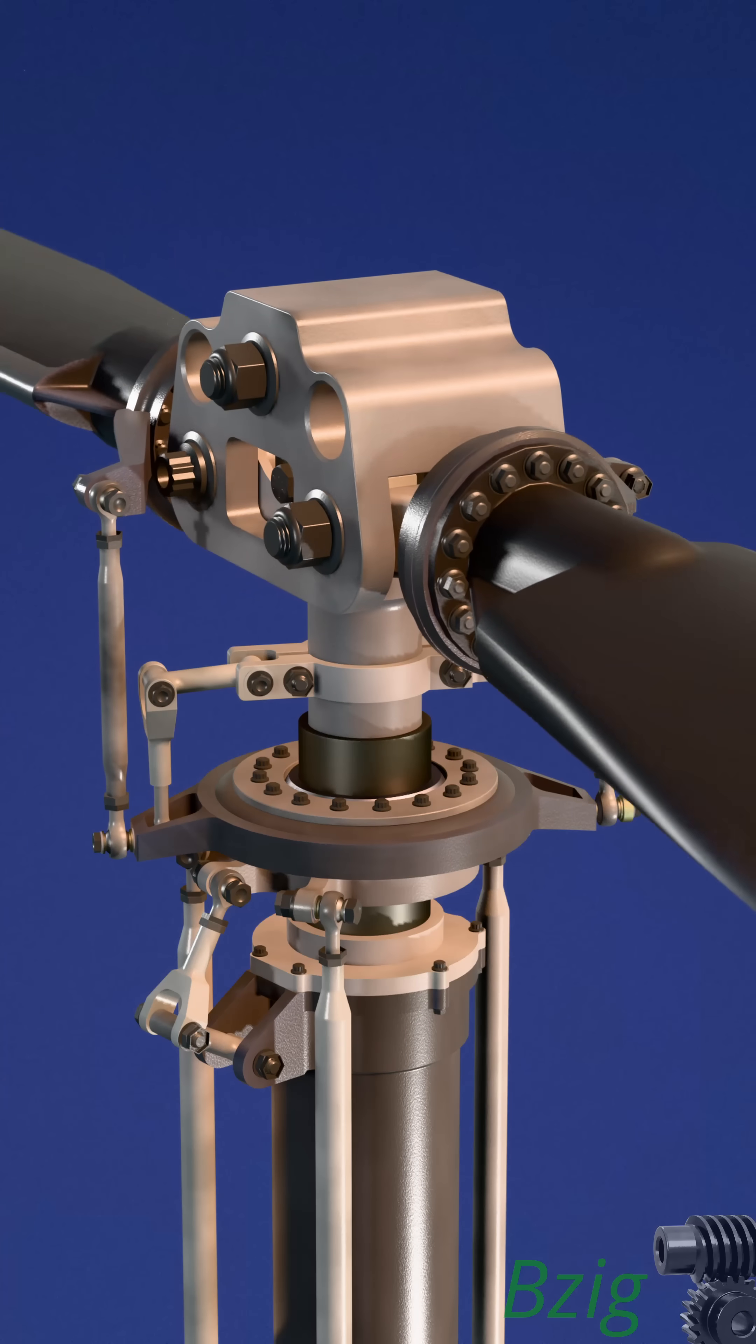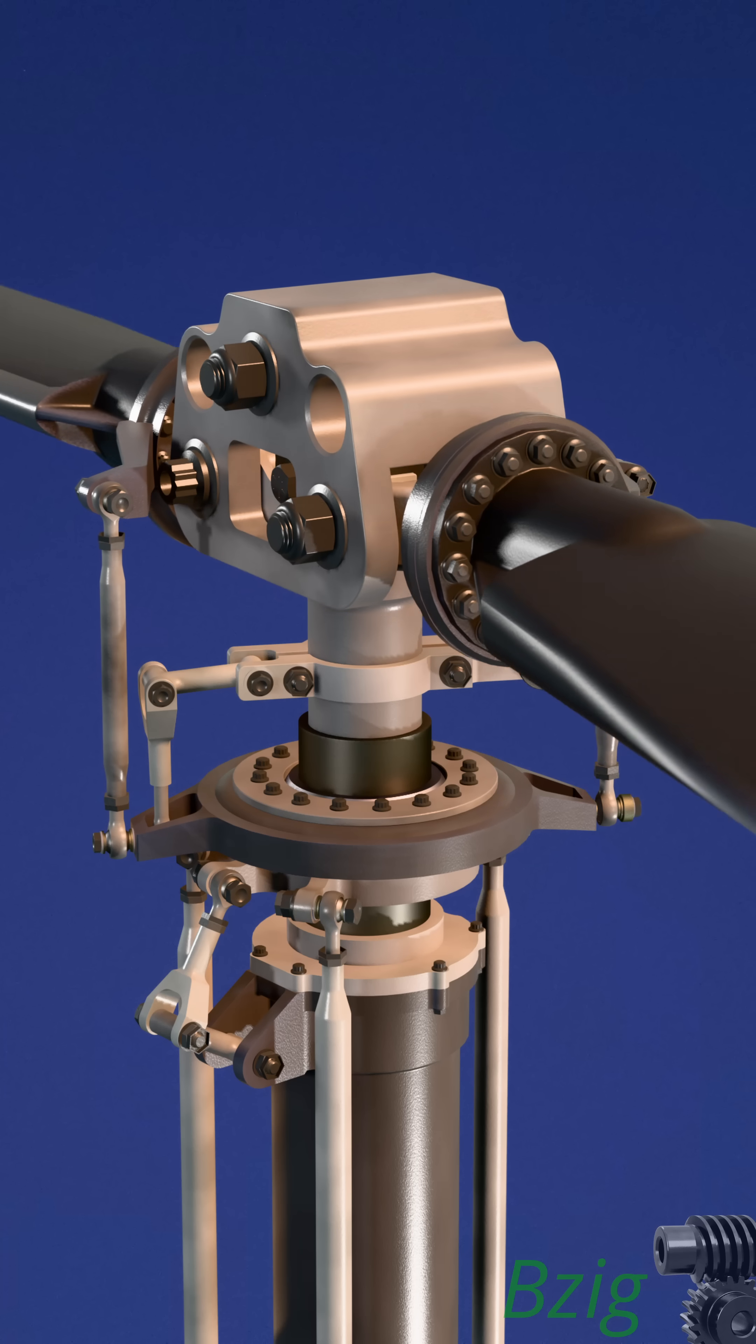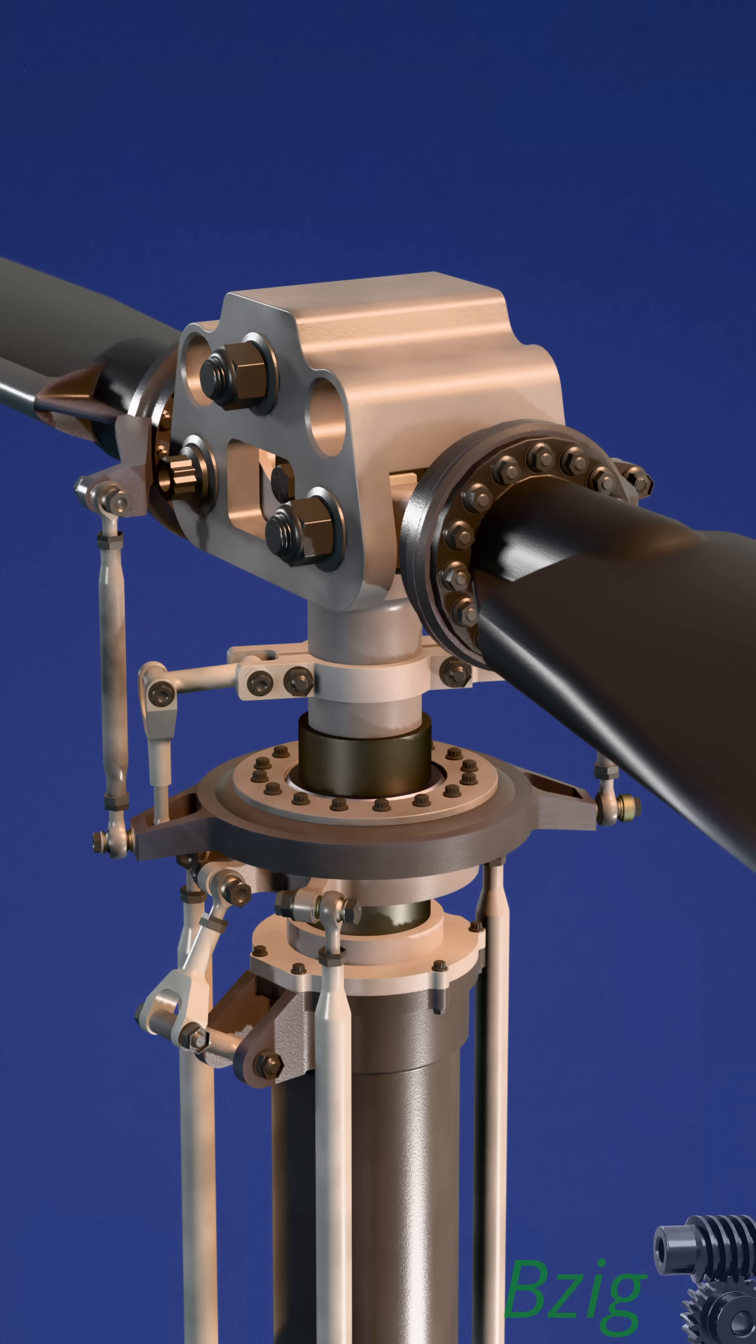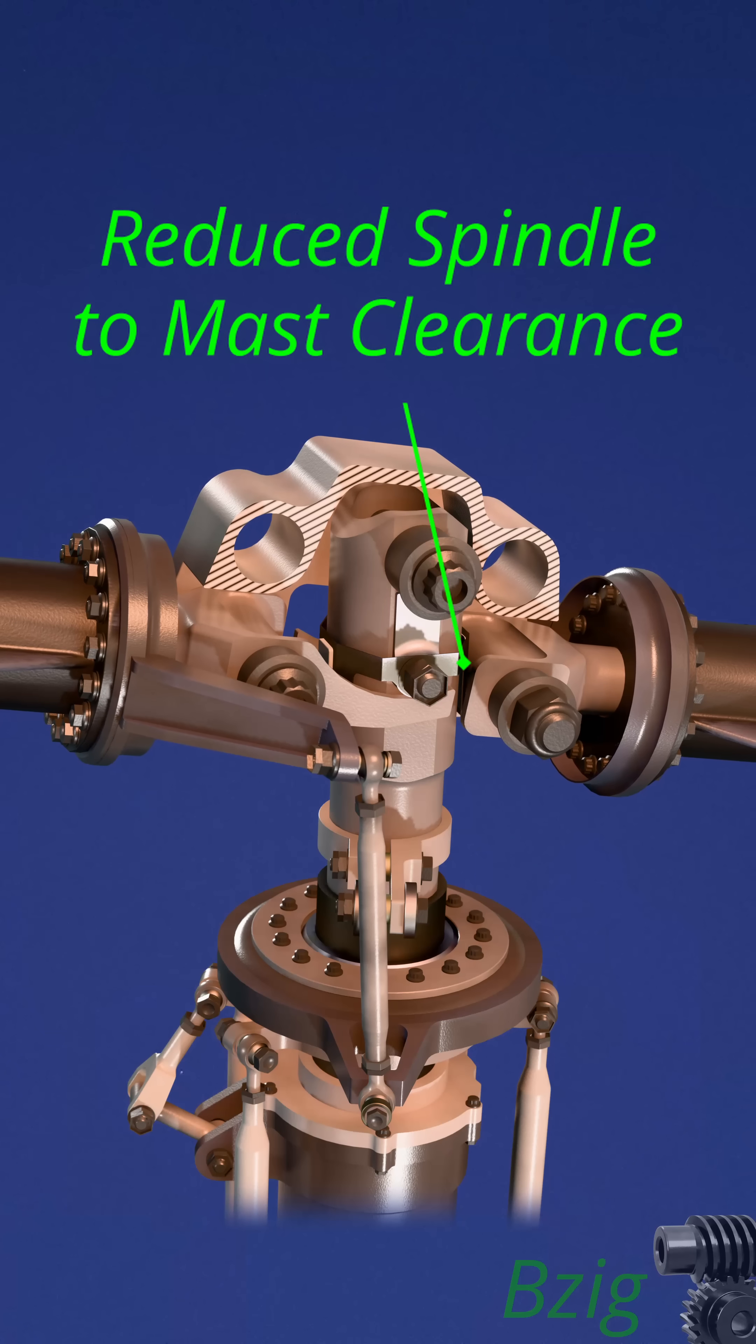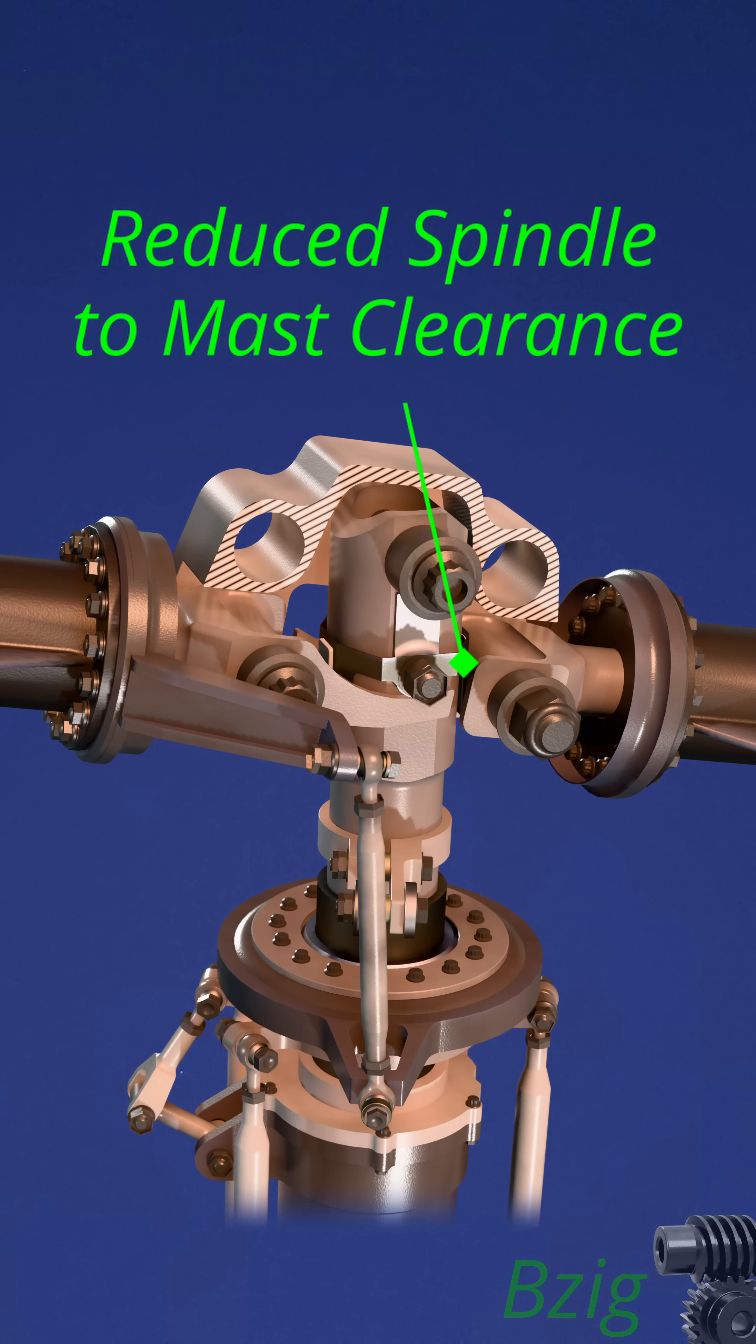In a previous video, I covered the mechanics of mass bumping in teetering rotor helicopters. Mass bumping is where the blade spindle, through the action of excessive rotor flapping, comes into contact with the rotor mast.